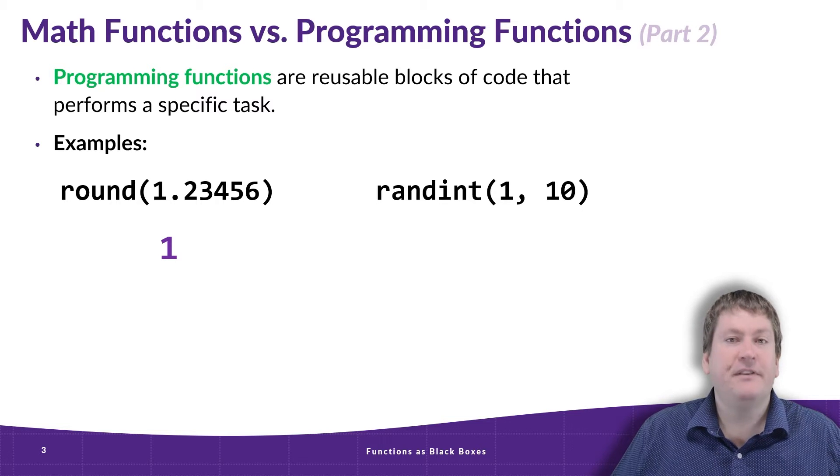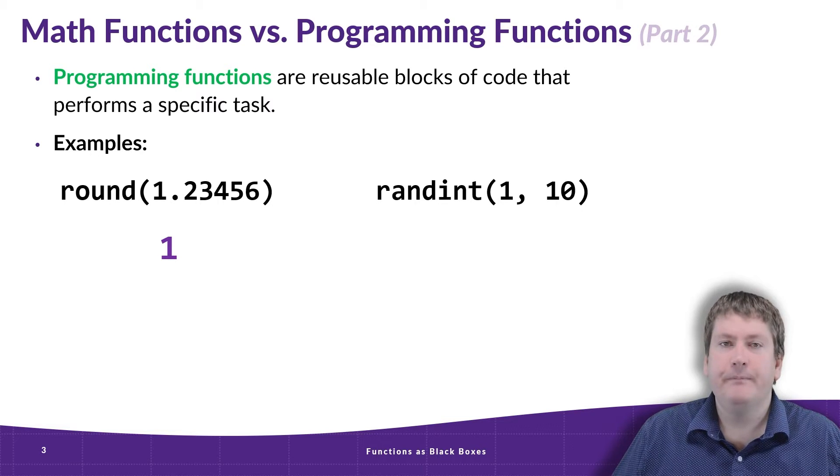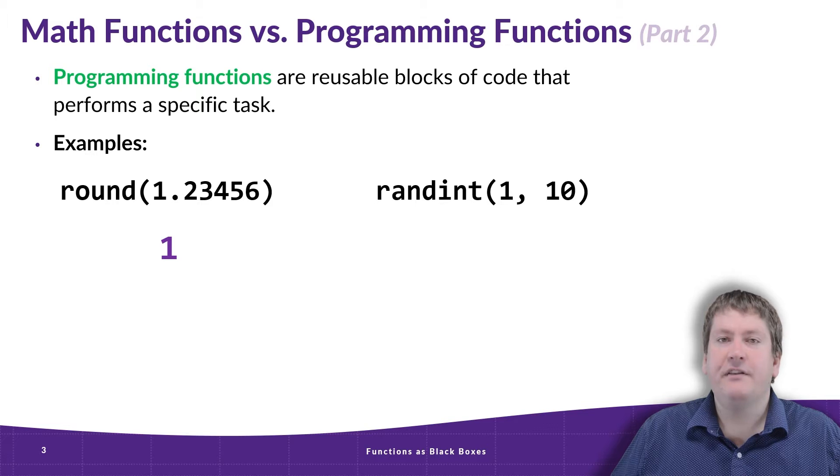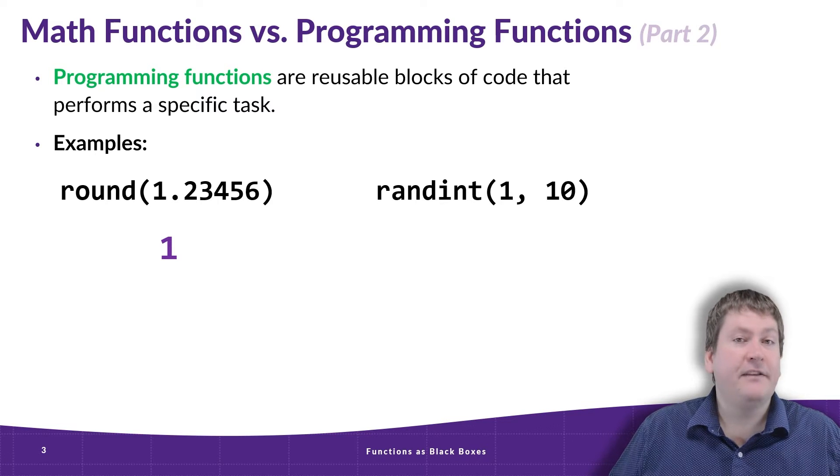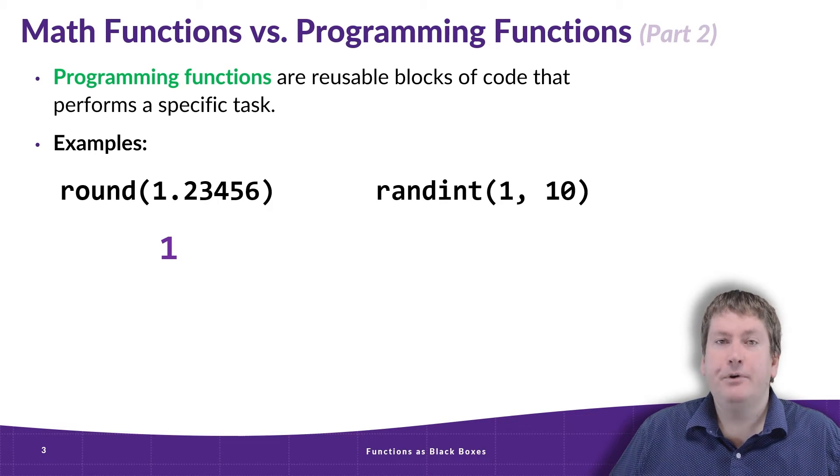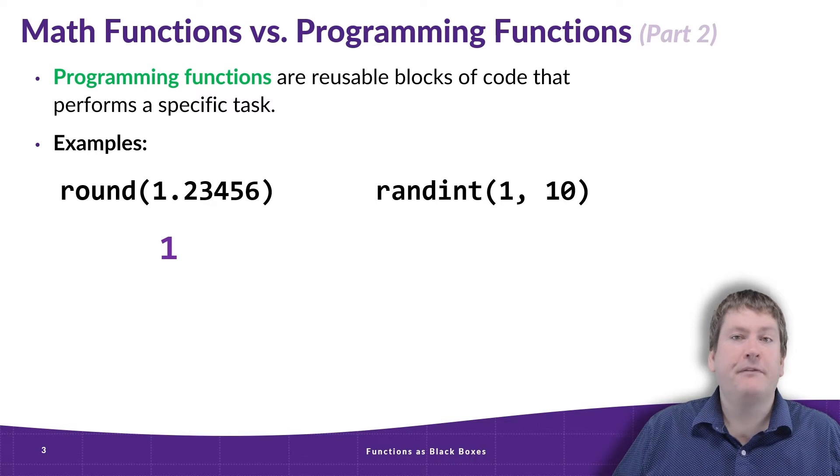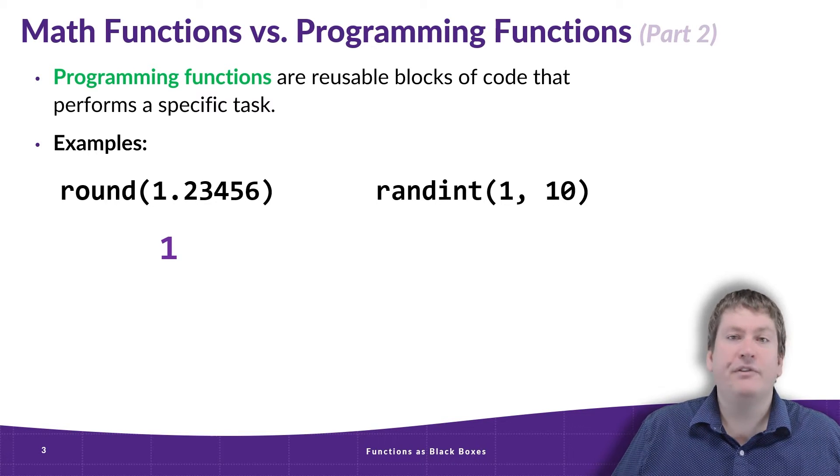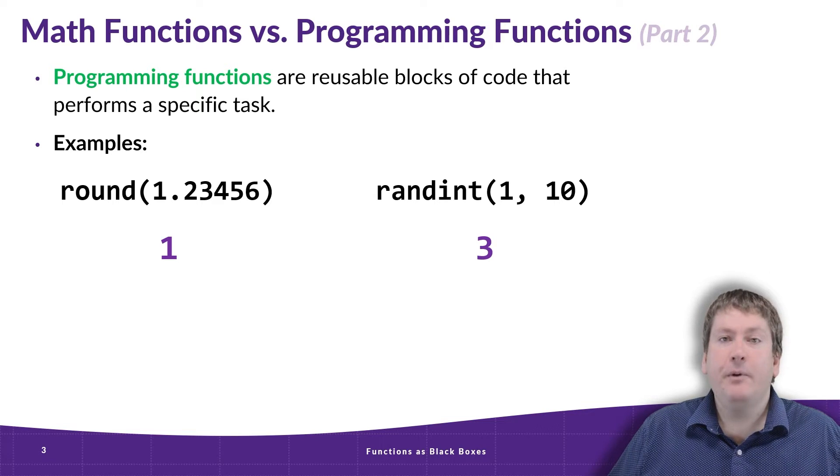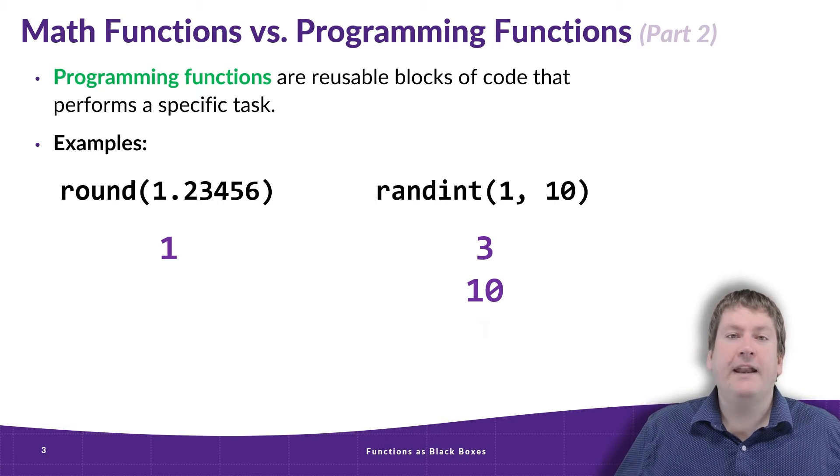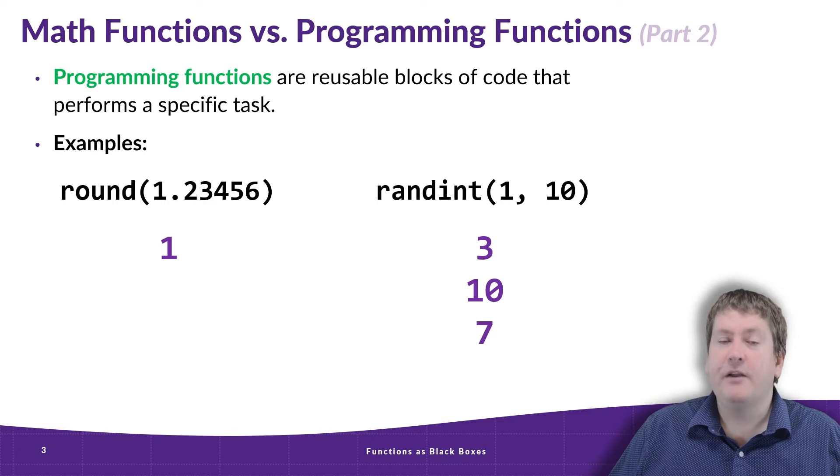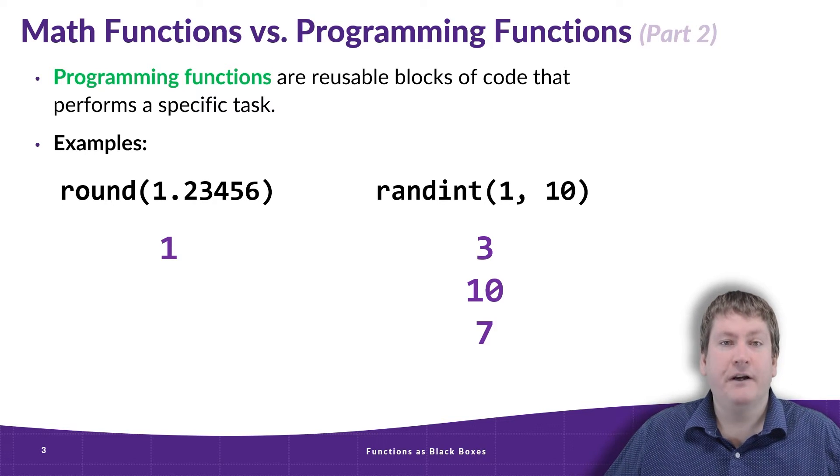But with programming functions, we're not bound to having just one output for the same input. We could have a wide variety of outputs that are different each time we call the function. For example, randint is from the random module. It takes a lower bound and an upper bound, and it produces a random number between those two values. In this case, we're giving it 1 and 10, so it could produce something like a 3. But then when we call it again, it could give us a 10, and if we call it again, it could give us something like a 7. It could be a different output each time we call the function.